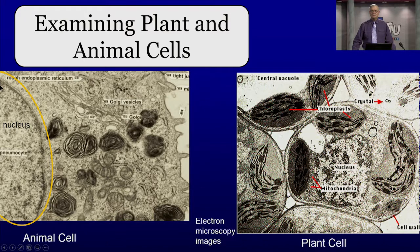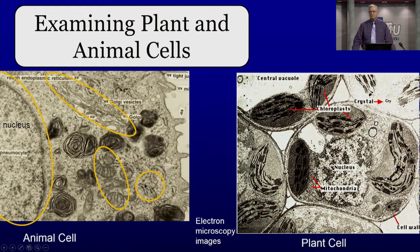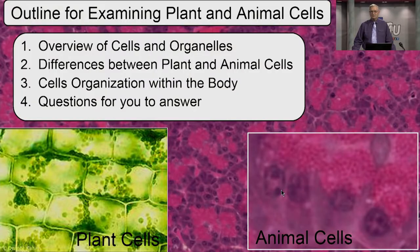Here we see a cell — we can see the nucleus with chromatin material inside. Here we see the Golgi apparatus, which looks kind of like pancakes cut on the side. Here we see a mitochondrion, rough endoplasmic reticulum important in making proteins for secretion or within the cell, and in plants we see a chloroplast which helps use energy from the sun to make sugars and starches. We'll look at an overview of cells and organelles, differences between plant and animal cells, and organization within the body.